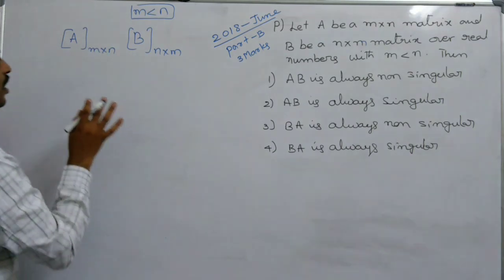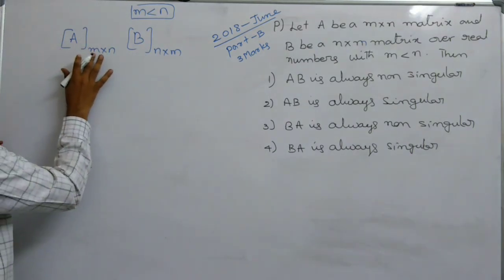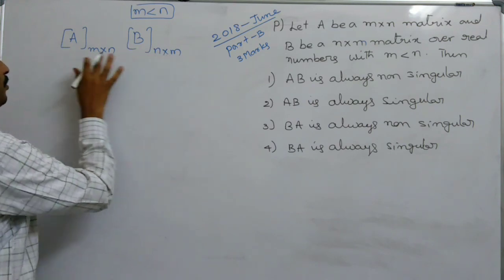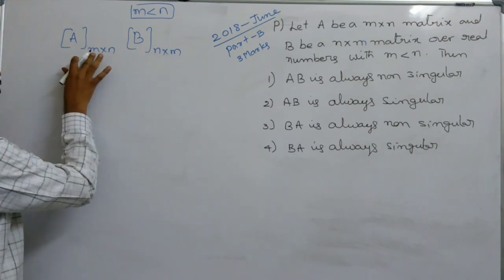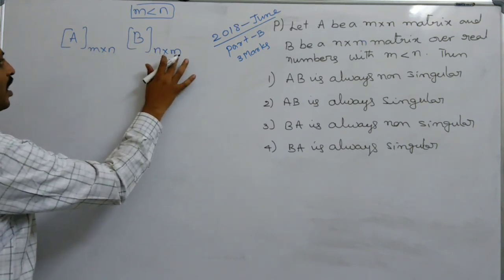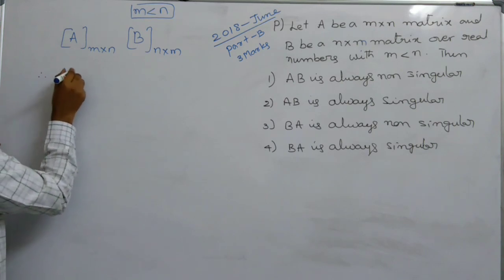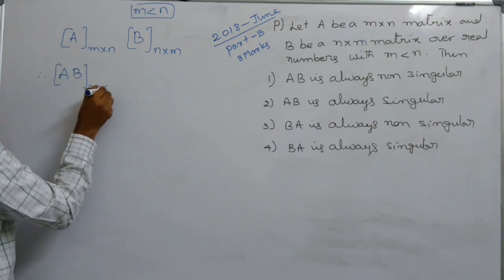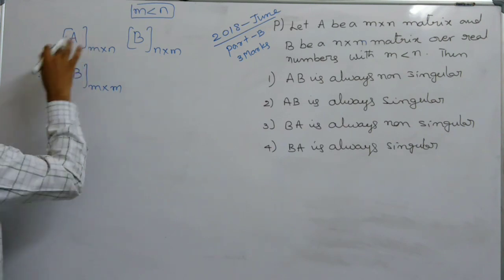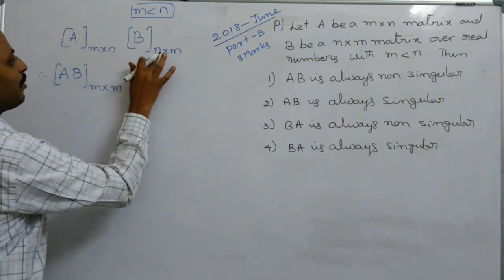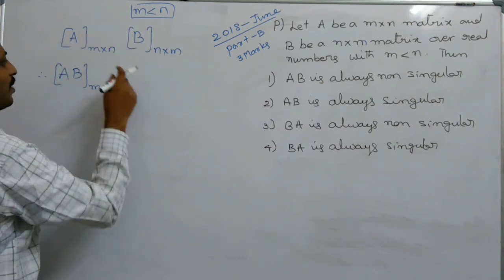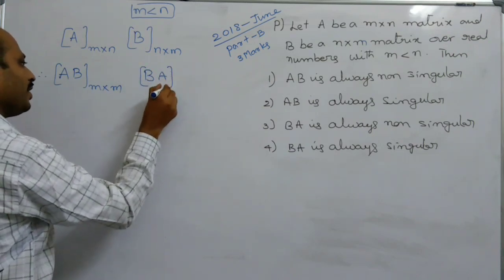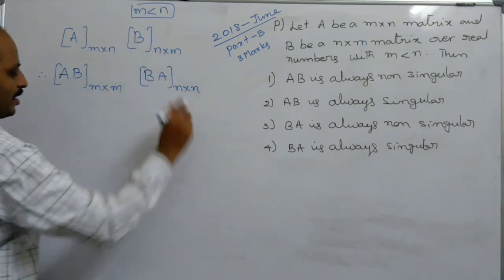Observe the order of the matrices. A is a matrix of order m×n — number of rows m, number of columns n. Therefore AB is well defined, whose order is m×m. B has number of rows n and number of columns m, so BA is also well defined, whose order is n×m.